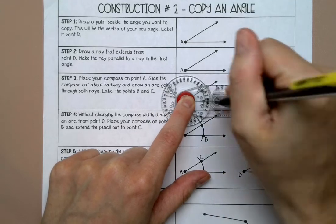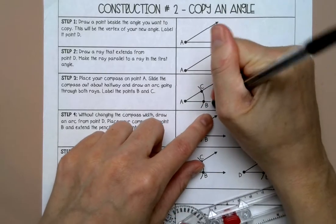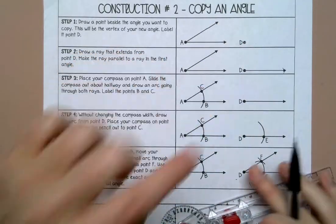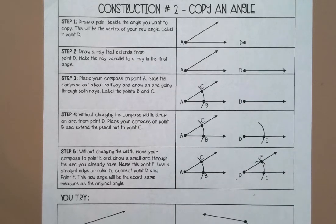Lock it and we're going to draw two arcs. Mine is smaller here but that's okay, it doesn't matter as long as it goes through both. I labeled it point B and point C.